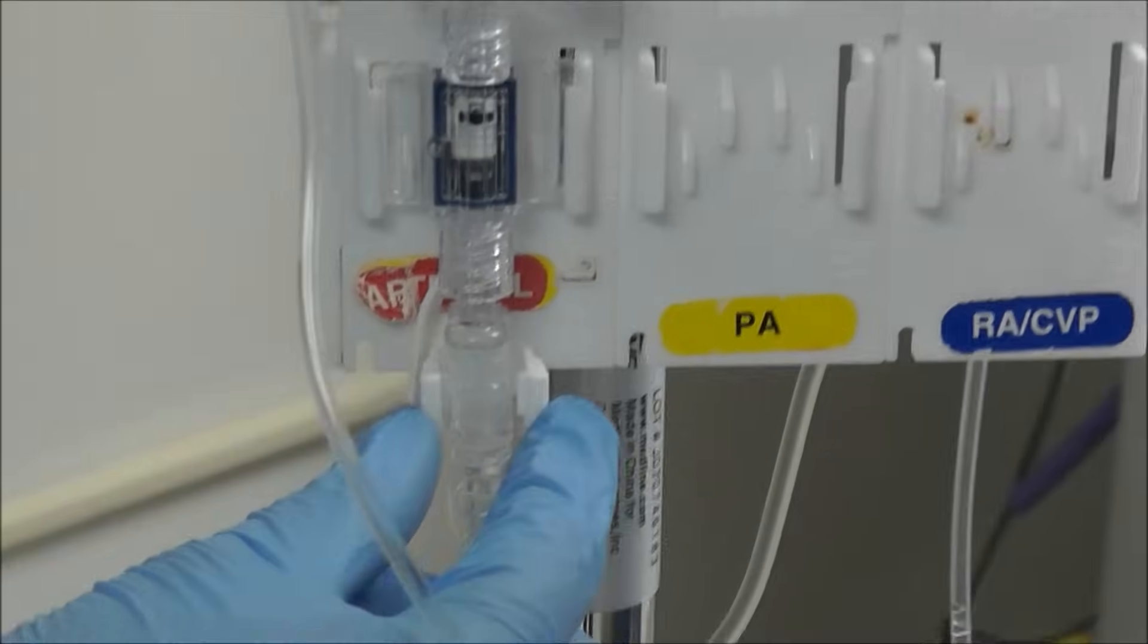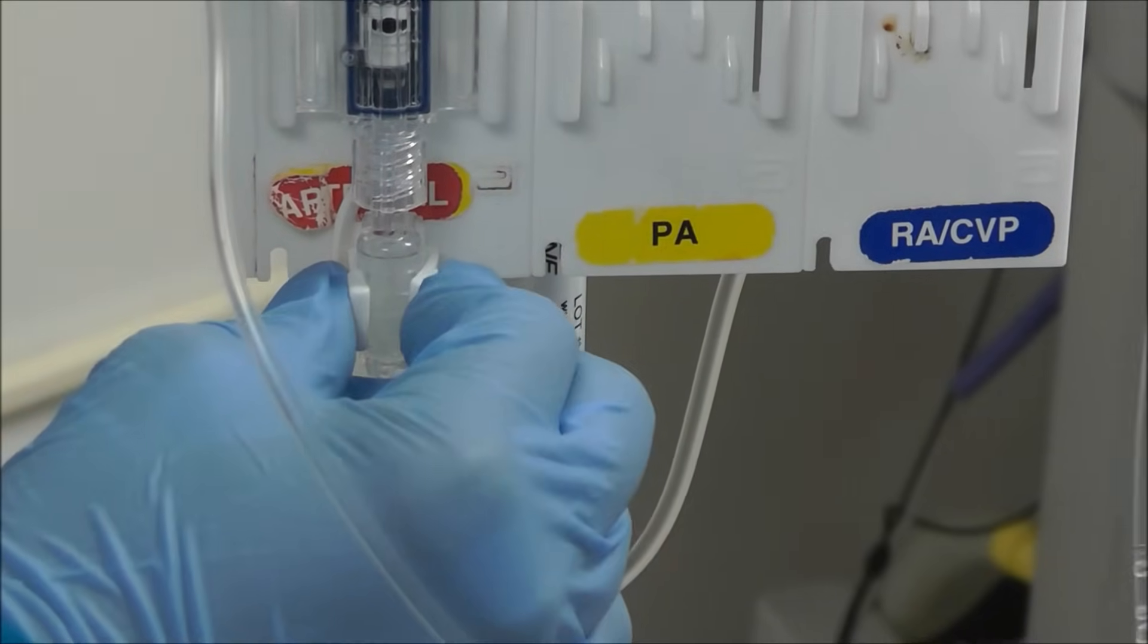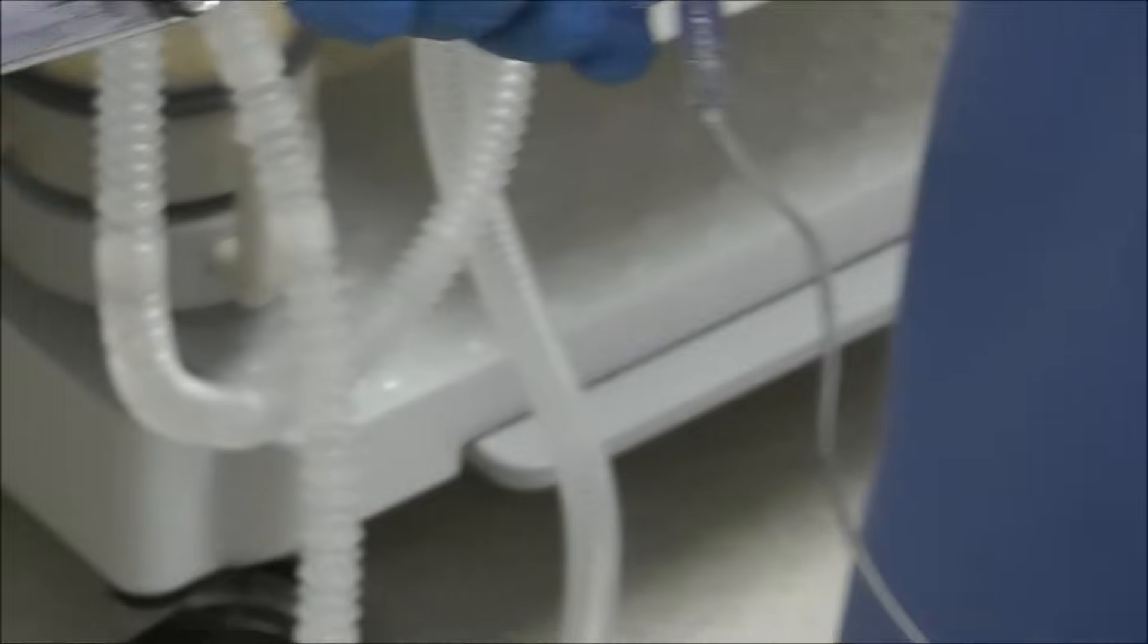Here's how you flush it. Push. Push in. Push in. And allow all the air to come out of your tubing. And we see that all the air is out. We've flushed the A-line. We're almost done here.